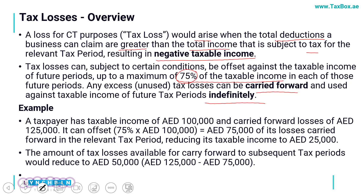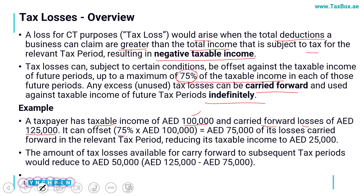Just have a look at an example. If my taxable income is 100K and the carry-forward losses from the previous year are 125K, I cannot carry forward the entire 125K against my 100K income. I would first calculate 75% of my 100K income, which equals 75K, and adjust this 75K against my income. My taxable income in that period would be 25K, and I would have a remaining balance of 50K in tax losses, which I can carry forward indefinitely and adjust in subsequent years.